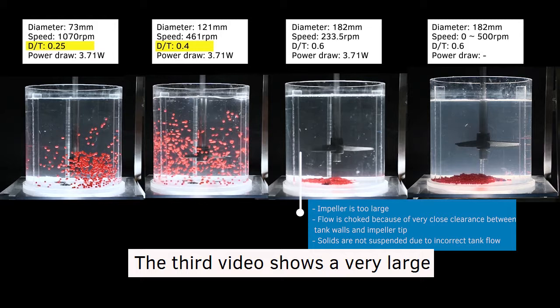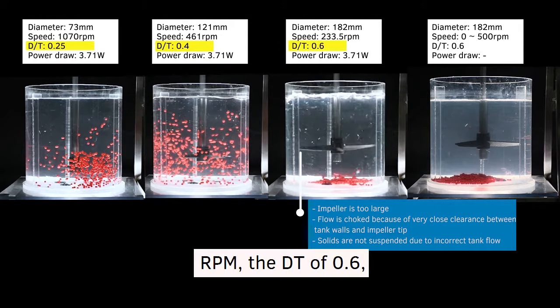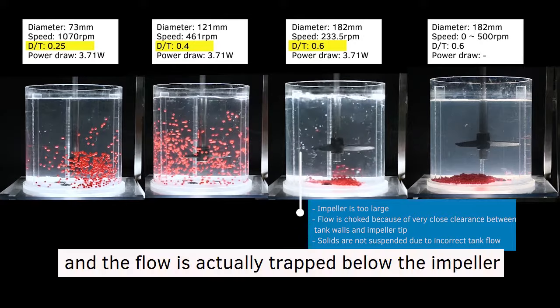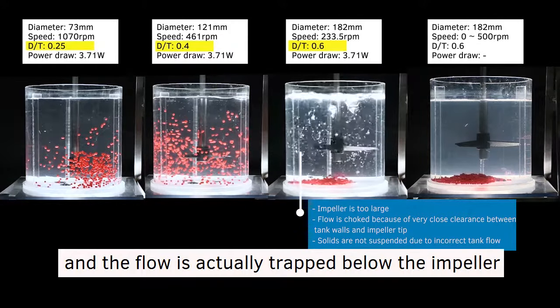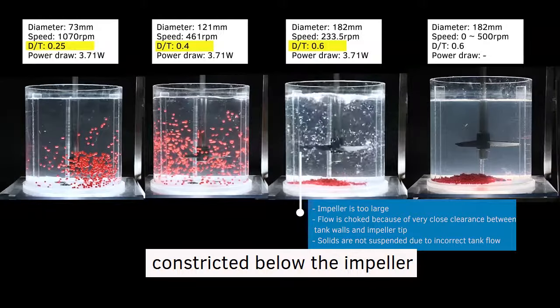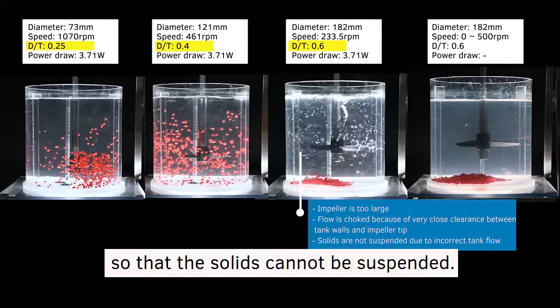The third video shows a very large impeller diameter at 182 rpm, the dt of 0.6, and the flow is actually trapped below the impeller, constricted below the impeller, so that the solids cannot be suspended.